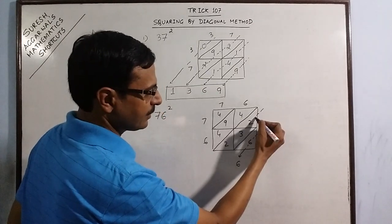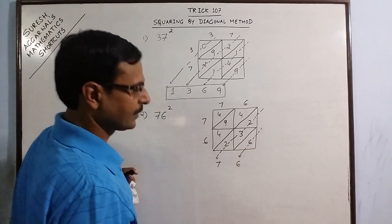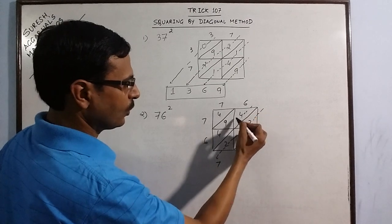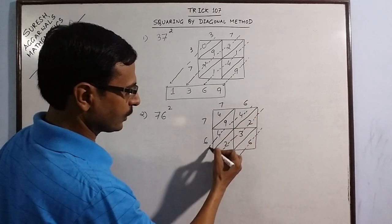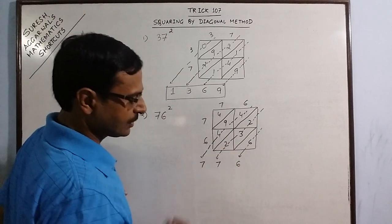The second number is 2 plus 3 plus 2. It will give you 7. Third number is 4 plus 9 plus 4. It will give you 9 plus 8 is 17.